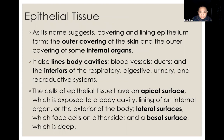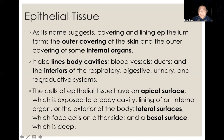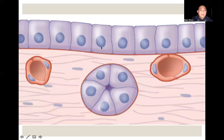By definition, as its name suggests, it is a covering and lining epithelium that forms the outer covering of the skin and also the outer covering of some internal organs. It also lines body cavities, blood vessels, ducts, and interiors of the respiratory system, digestive, urinary, and some reproductive system organs. The cells of this epithelial tissue have an apical surface exposed to the body cavity, lateral surfaces that face cells on either side, and a basal surface found in the deep layer of the skin or organ.